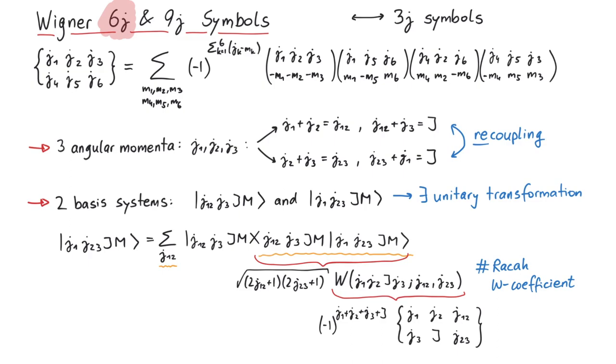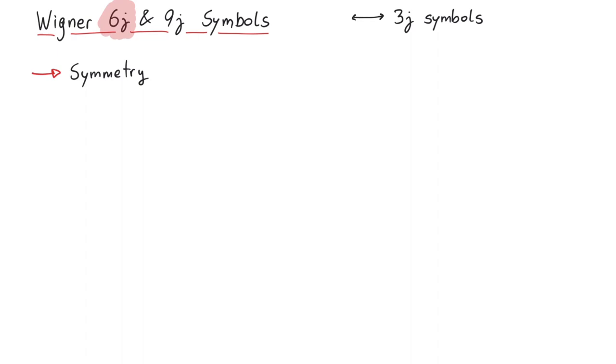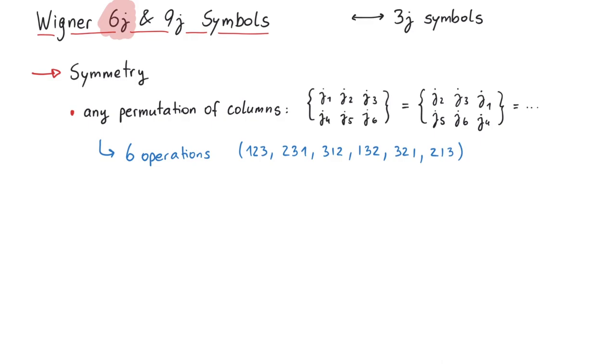But wait, if there are already the W coefficients, why do we bother to define the 6j symbols? The reason is similar as with the case of Klebsch-Gordon coefficients and 3j symbols. The 6j symbols simply are much more symmetrical than the Raqqa W coefficients. In particular, any permutation of the columns inside a 6j symbol leaves the value invariant. That's 6 operations including the identity operation.